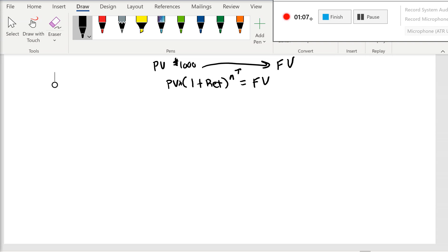So let's say that we have a present value of $1,000, and we're going to do this at an interest rate or return of 7.2%, and we're going to say this is over 10 years. So what's the future value?